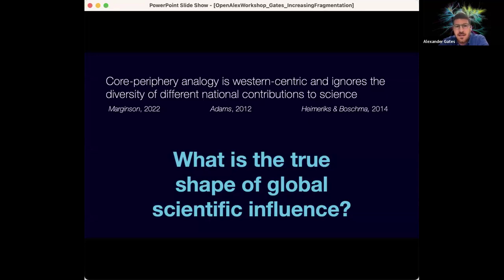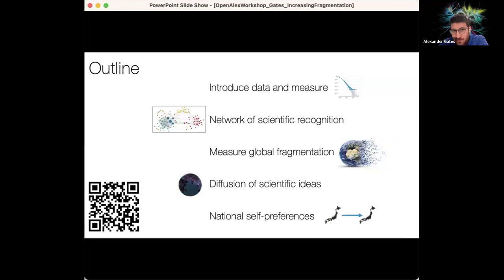So the outline for the talk today, I'm going to give you a quick introduction to our measures and the networks that we're allowed to build out of those. Some insights we've gathered about the structure of global science and how that's actually been fragmenting over the last 20, 30 years. And then finally, some insights into the diffusion of scientific ideas.